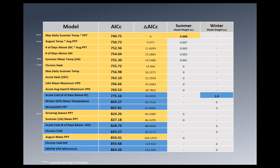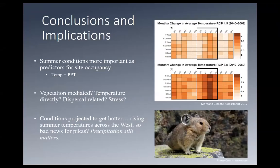Looking at all the models we ran: yellow represents summer conditions and blue represents winter conditions, ranked from best to worst predictors. The trend of yellow on top indicates that summer conditions are more important for pikas in this region. Winter conditions do not appear to be as important in predicting whether or not sites are occupied — though that does not appear to be the case up in Canada and some other areas.